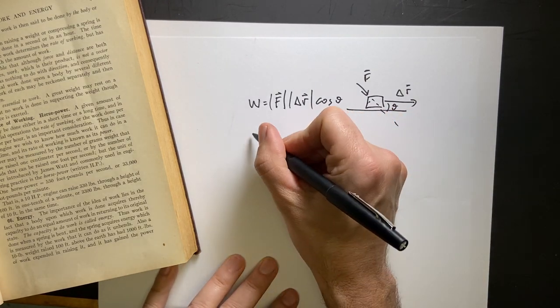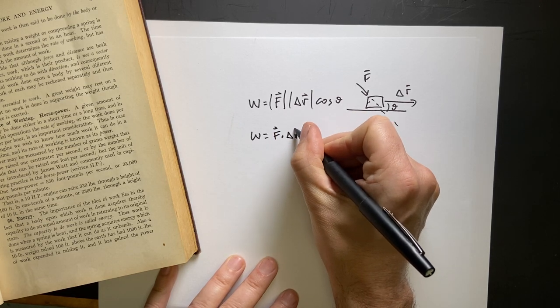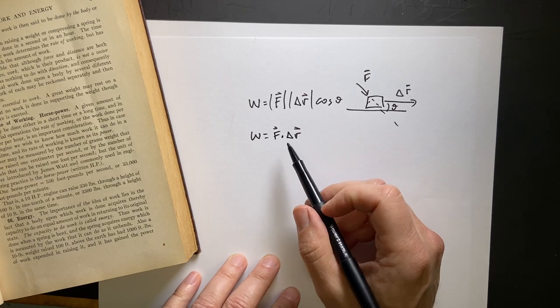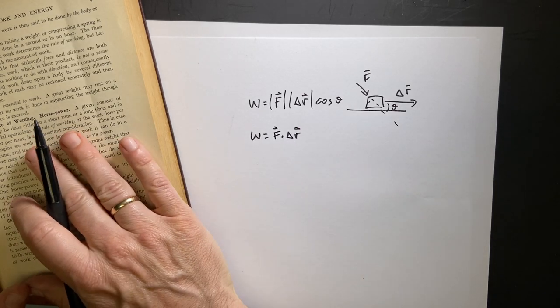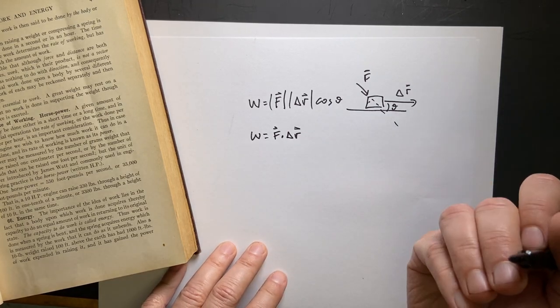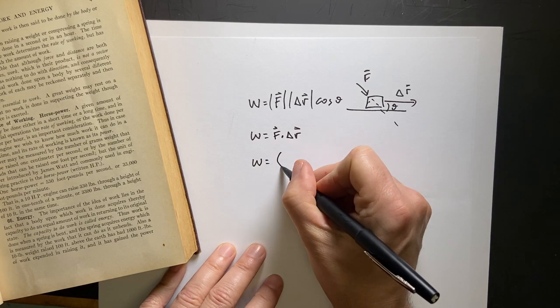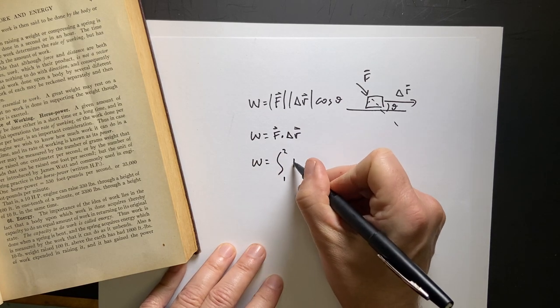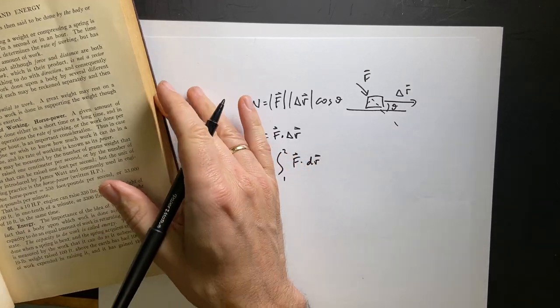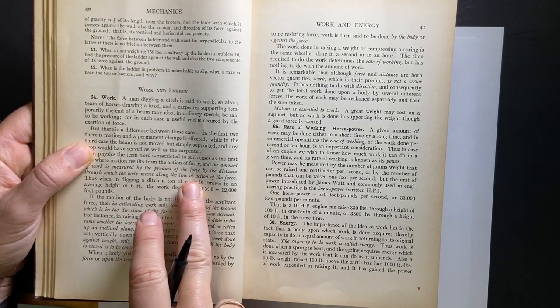Then if you want, you could do this as the dot product, work equals F dot delta R. That's the same definition as the dot product, but if you write these as vectors, which this book doesn't seem to be using, you could write it that way. And then finally, if you had a non-constant force or a non-constant path, you'd actually have to write this as a line integral from point one to point two of F dot dr. I don't think this is a calc-based book. This is funny right here. They didn't even write this as an equation. They just said it out.